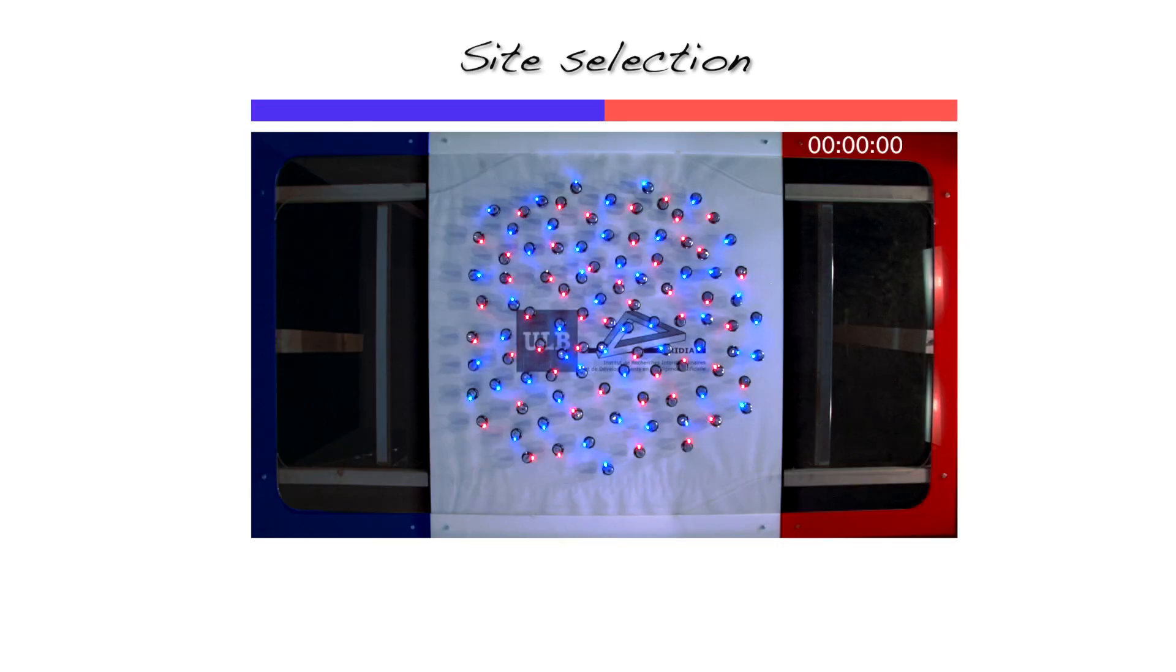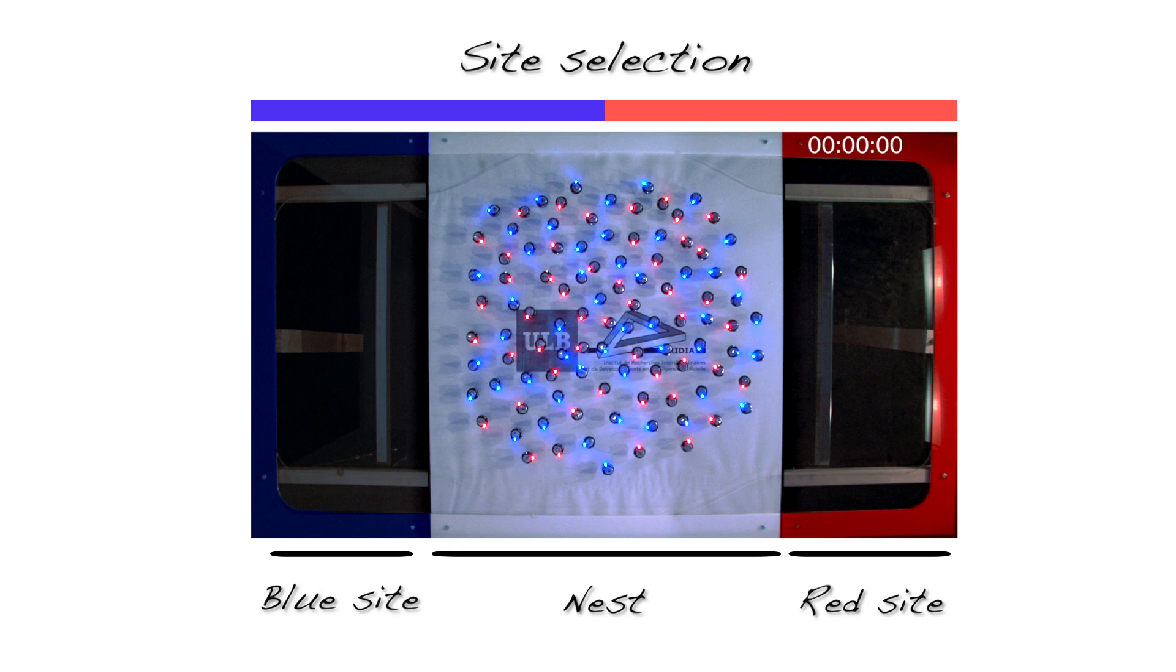We consider a site selection problem to study collective decision-making in a swarm of 100 Kilobots. Robots are initially located in the nest, the area where robots exchange site preferences and take individual decisions. From the nest, robots can move either to the red or to the blue site.